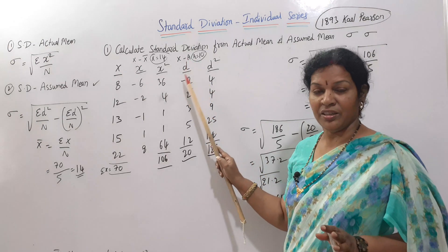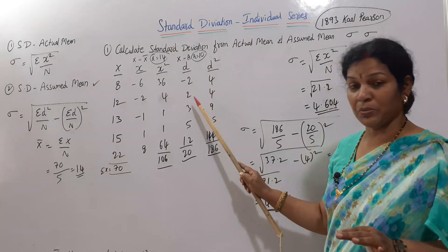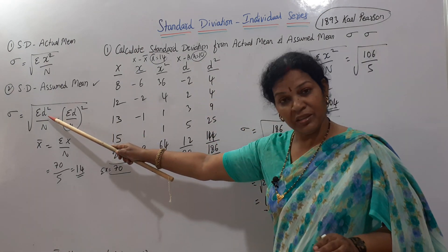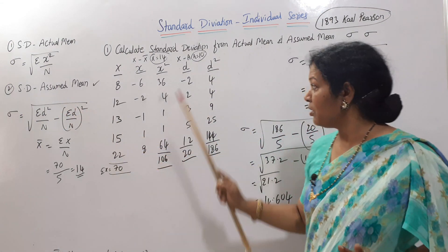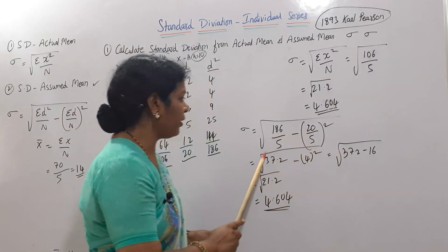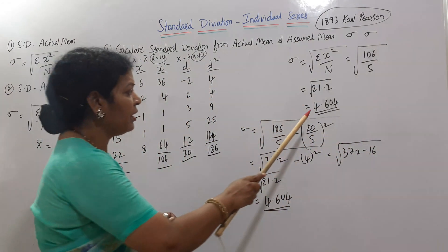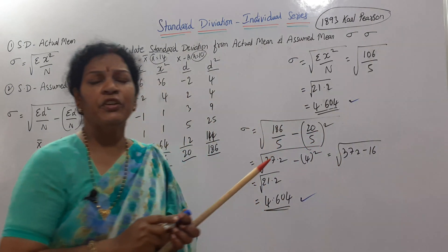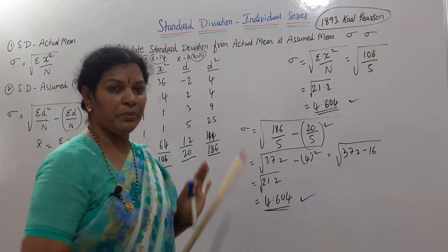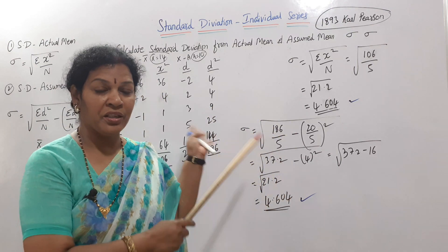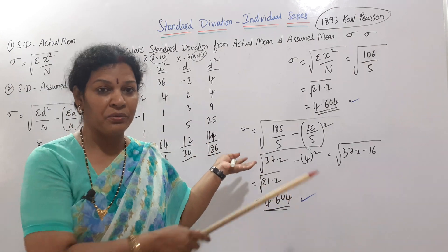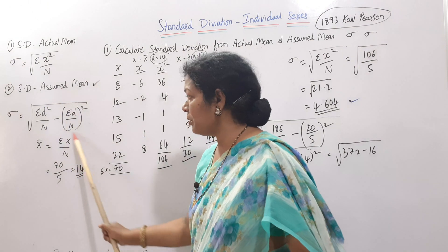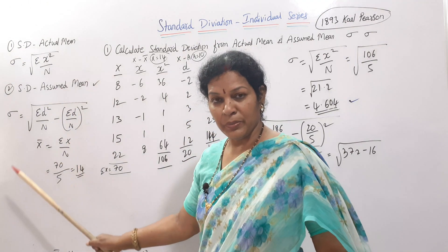You can take d and d square. We need total of d and d square because as per the formula, d square is there and d is also there. So we totaled both and applied in the formula. Simple calculations. Answers are same on both sides. Assume mean means you can take any number assuming and work out this formula. Actual mean means first of all you have to calculate the actual mean. Once you get the mean, then only you can take deviations x minus x̄.